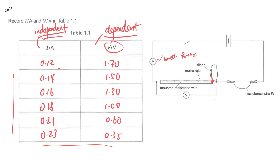The next thing to take note of is how many decimal places you need to put. It all depends on the precision of the instrument you are using. As you know, the ammeter and voltmeter have a precision of two decimal places, so you definitely have to put two decimal places. For example, if you write 1.5 or 0.6 here, marks will be deducted because those are only one decimal place.